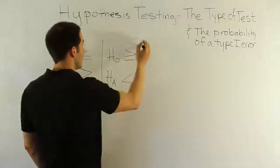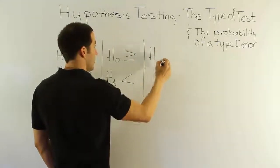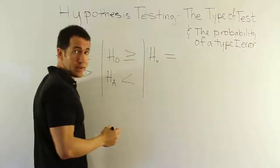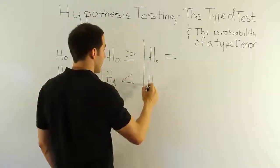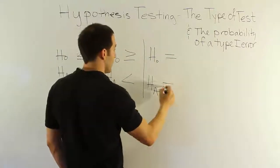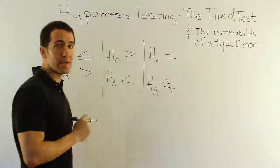And then finally, the last scenario, H0 could have the equal to sign, and HA therefore would have to say not equal to. Those are the only three cases we have.